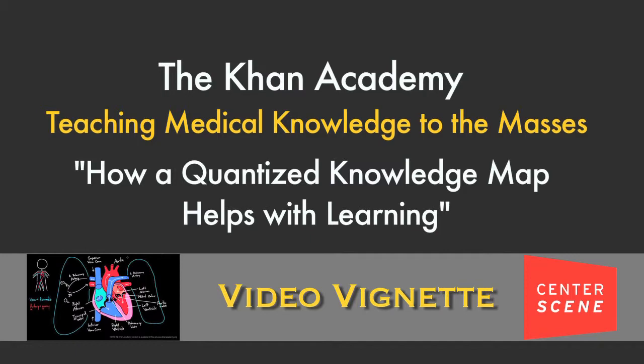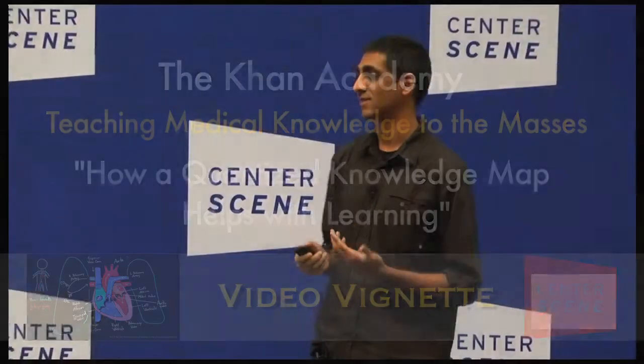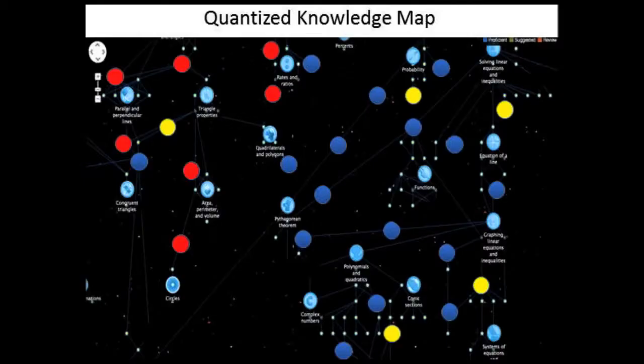So this is what we call a quantized knowledge map. When you look at it, it's a little overwhelming, right? You look at this, it's got a lot of circles and lines, and it's unclear what you're looking at exactly.